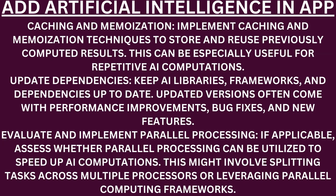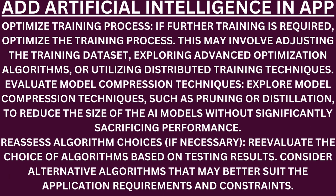Evaluate and implement parallel processing. Assess whether parallel processing can be utilized to speed up AI computations — this might involve splitting tasks across multiple processors or leveraging parallel computing frameworks. Optimize training process. If further training is required, optimize the training process by adjusting the training dataset, exploring advanced optimization algorithms, or utilizing distributed training techniques. Evaluate model compression techniques. Explore model compression techniques such as pruning or distillation to reduce the size of AI models without significantly sacrificing performance. Re-assess algorithm choices. Re-evaluate the choice of algorithms based on testing results — consider alternative algorithms that may better suit the application requirements and constraints.